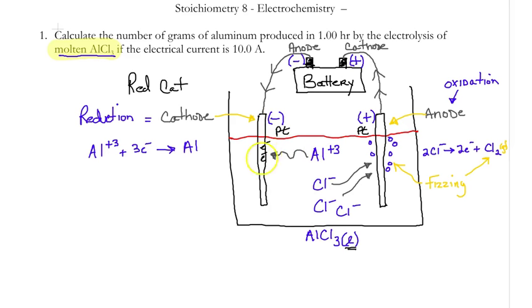Notice the electrons here come from the anode of the battery. So the anode of the battery forces aluminum plus three to reduce.